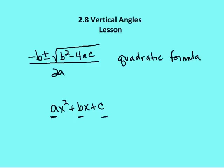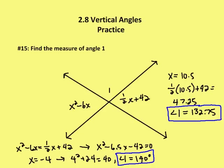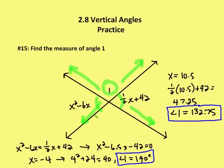Let's go ahead and tackle our one problem from this chapter. The problem asks us to find the measure of angle one. Here we have two pairs of opposite rays, so I have two pairs of vertical angles. I know x squared minus 6x is equal to one-half x plus 42. I set those two expressions equal and my ultimate goal is to find the measure of angle one. I know angle one is supplementary to both x squared minus 6x and one-half x plus 42. Setting the vertical angles equal to each other, I end up with x squared minus 6.5x minus 42 equals zero. I can't factor this easily, so I'll use the quadratic formula.